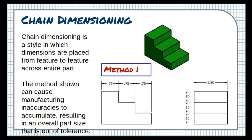Chain dimensioning is a style in which dimensions are placed from feature to feature in a string, or a chain, all the way across the part. There are two methods for chain dimensioning, and the one shown here presents a bit of a problem.